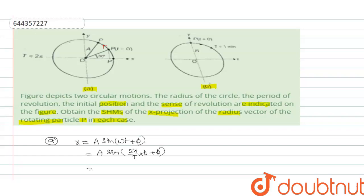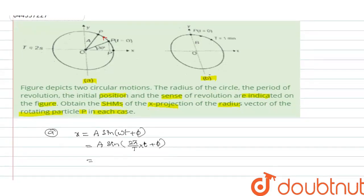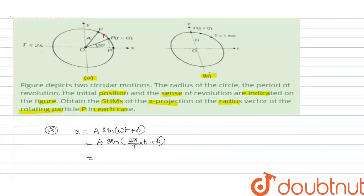Now, just write down from the above figure. So A sine 2 pi, the time period is given how much here? 2 seconds, into t plus phi. Okay. This is given theta is 30 degrees, so I can write theta 30 degrees as pi by 6.